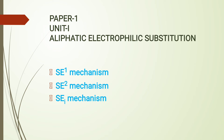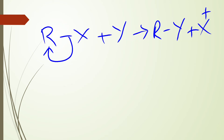In this class, you are learning about the types of electrophilic substitutions — that means SE1 Mechanism, SE2 Mechanism, and SEI Mechanism. First, let us know about electrophilic substitution. What is electrophilic substitution? If in a reaction, an atom or group of atoms is replaced by another atom or group of atoms in the form of an electron-deficient center, then it is known as aliphatic electrophilic substitution.